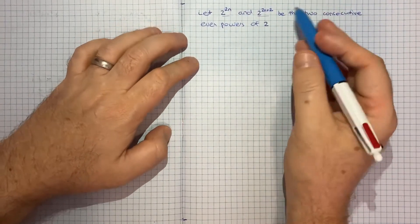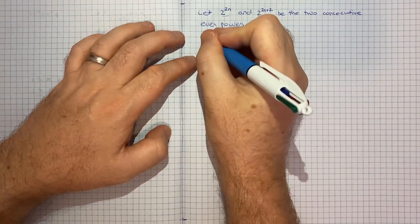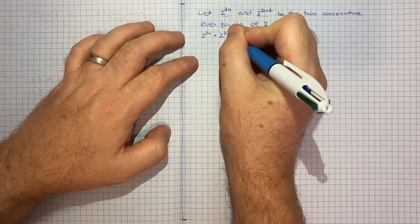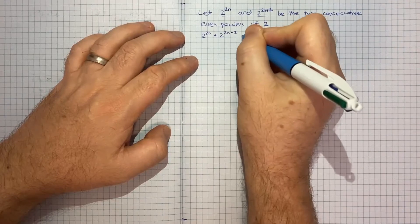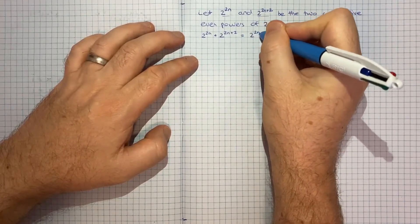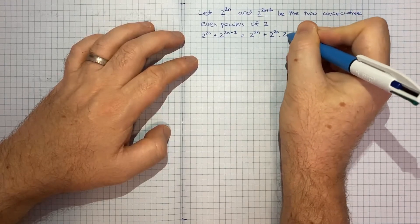And from there we can just do the algebra. So we want to add those up. So 2 to the 2n plus 2 to the 2n plus 2 is equal to 2 to the 2n plus 2 to the 2n times 2 to the 2.